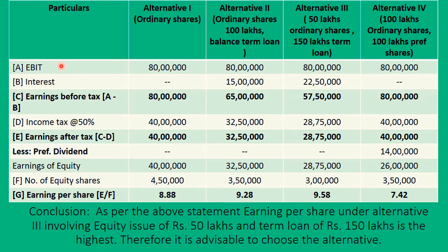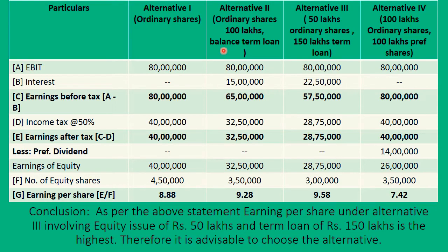From EBIT, the first deduction is always interest. In Alternative 1 there is no existing or new loan, so interest is nil. In Alternative 2, the term loan is 100 lakhs at 15%, so 15% of 100 lakhs gives interest of 15 lakh rupees per year.